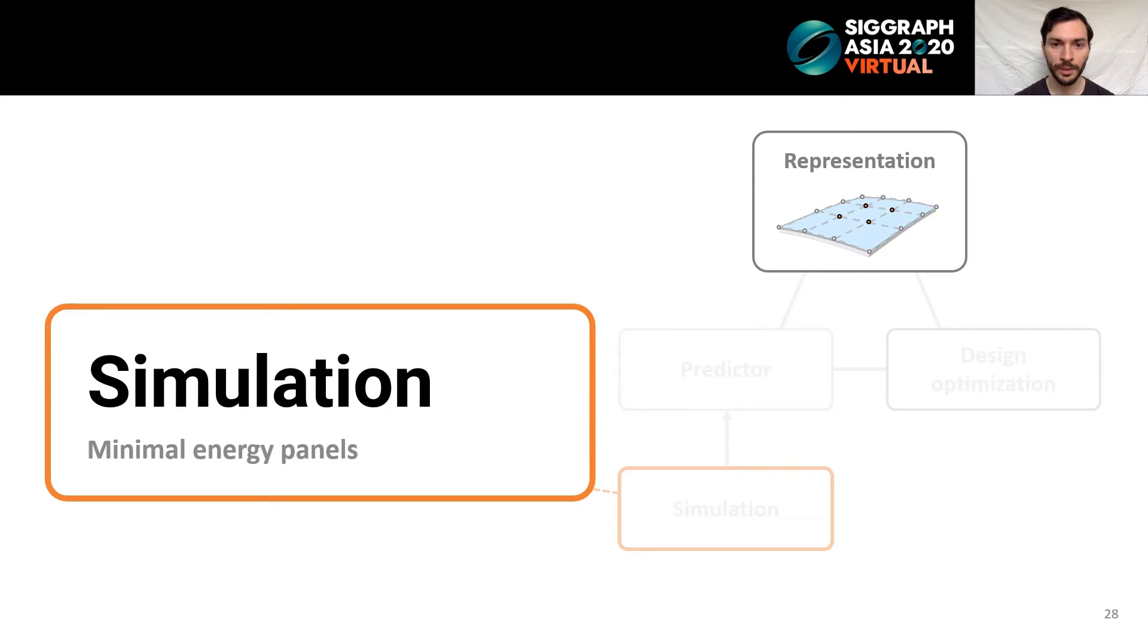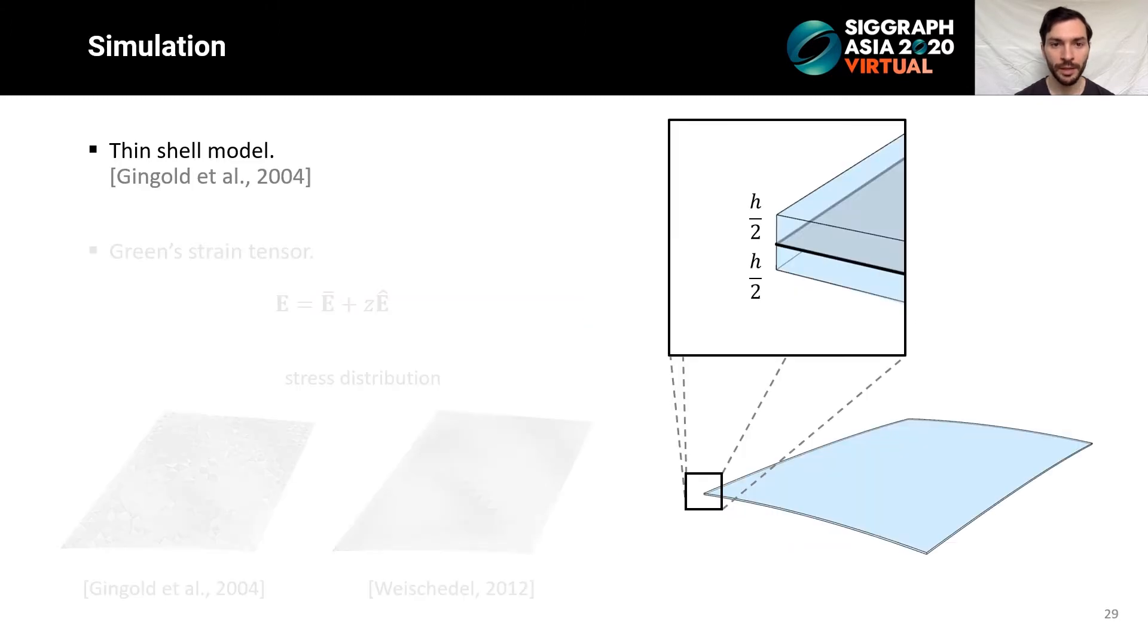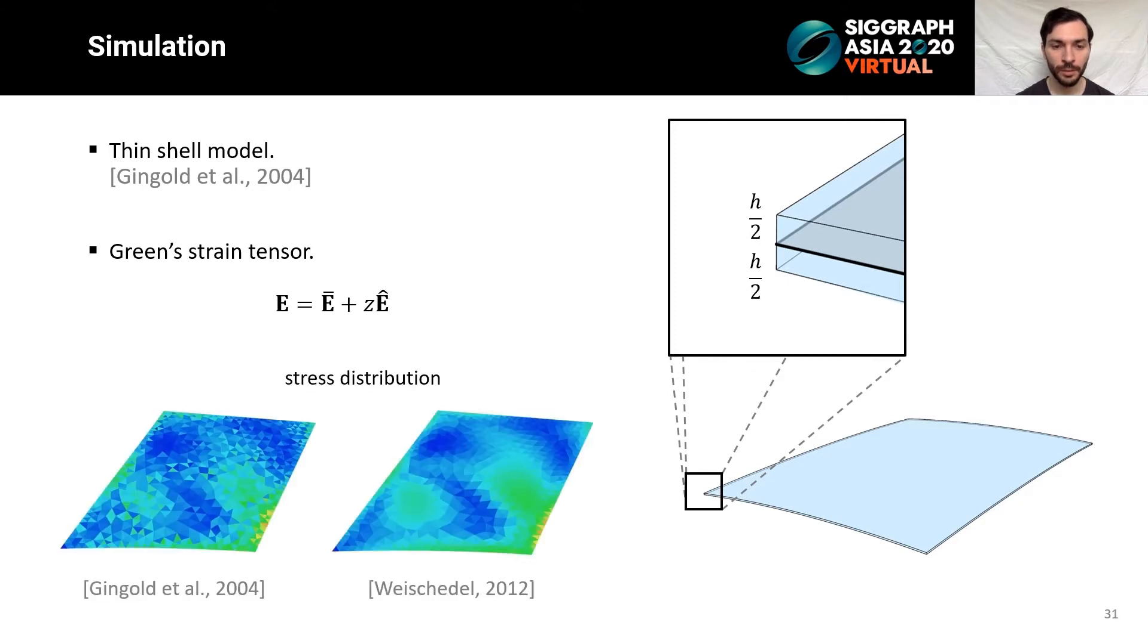Let us now discuss our simulation and shape optimization method. The simulation is based on the classical shell theory, where a glass panel is represented by a normally extruded mid-surface. In particular, we use the model by Gingold et al. with the mid-surface discretized by triangles. In this model, under linearity assumptions, the Green strain tensor is decomposed into in-plane and bending components. Here E-bar is the membrane strain and E-hat is the shape operator. Using an improved version of the discrete shape operator, as in Weischedel, we obtain smooth stress distributions. We refer to the original papers for the details.